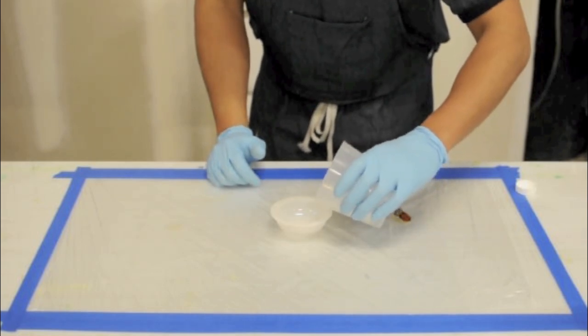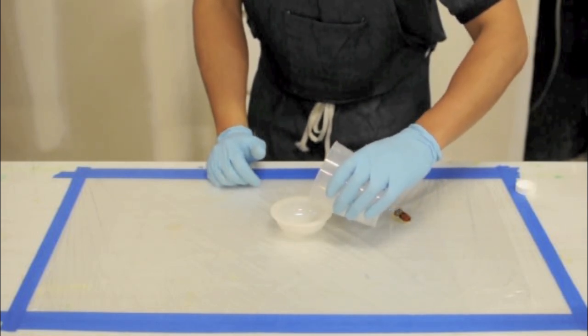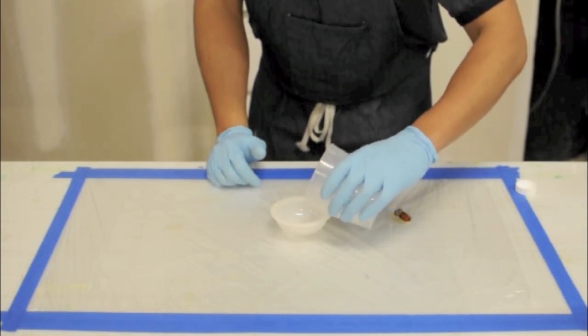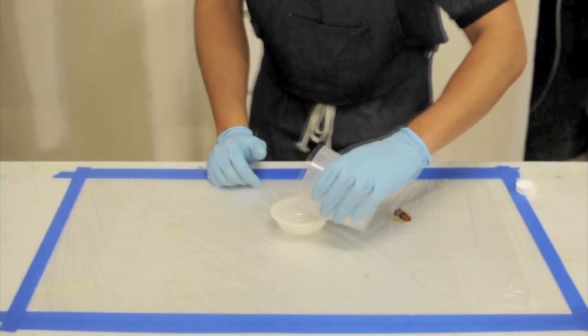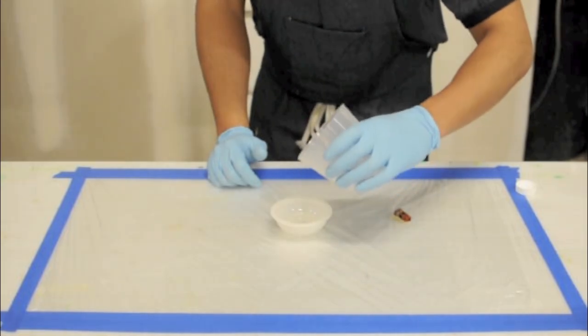When pouring resin into the mold, be sure to pour it slowly so you do not reintroduce air into your casting. And when finished, cover the mold to prevent any dust or dirt from contaminating your casting.